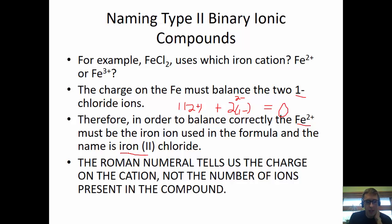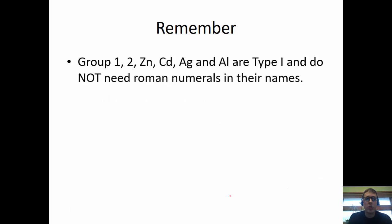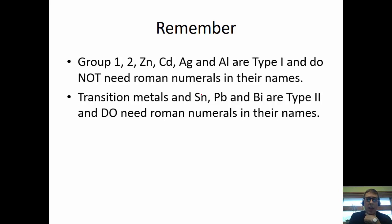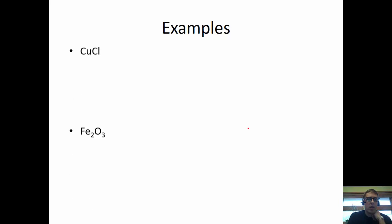Iron(II) chloride — note that 'iron(II)' does not mean we have two irons. We have one iron, but it has a charge of 2+. The Roman numeral tells us the charge, not the number of ions present. So remember: group 1, group 2, zinc, cadmium, silver, and aluminum are type 1 and do not need Roman numerals. Transition metals, as well as tin (Sn), lead (Pb), and bismuth (Bi), are type 2 and do need Roman numerals — and the Roman numerals are the charges, not subscripts.